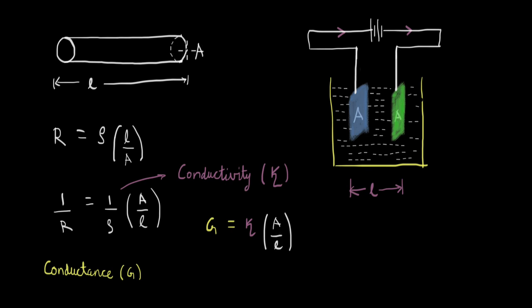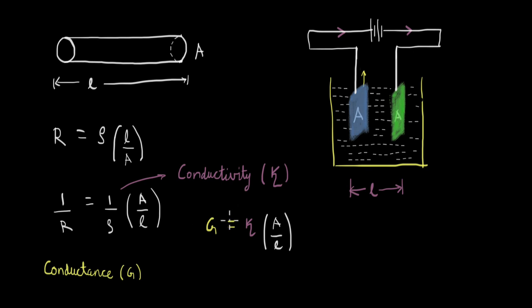For the wire, A was the cross-section area and L was the length. For the electrolytic cell, L is the distance between the two plates and A is the common area in the solution between them. Both plates are dipped in the solution, each with area A, but the key point is this is the effective common area. If you pull one plate so only half is dipped, the effective area becomes A/2, and if it's completely out, the circuit breaks.